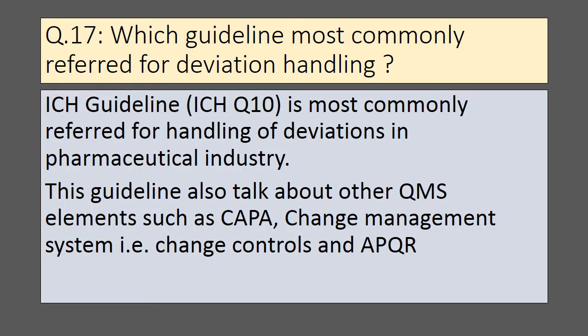Which guideline is most commonly referred to for deviation handling? ICH Q10 is most commonly referred to for handling deviations in the pharmaceutical industry. This guideline also addresses other QMS elements such as CAPA, change management system (change controls), and APQR.